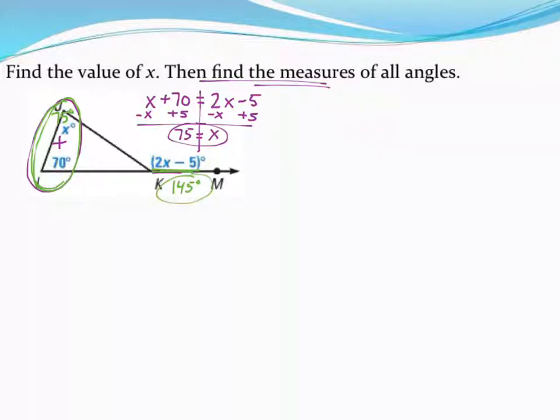A great way to check this though would be let's actually also plug in 75 for x and see if it also works out to be 145. And sure enough 2 times 75 is 150. Subtracting 5 also gets me 145 degrees.